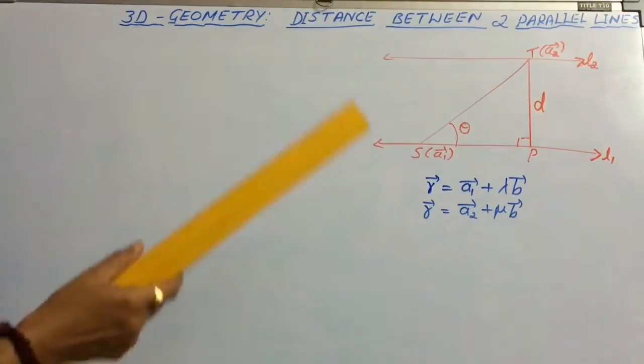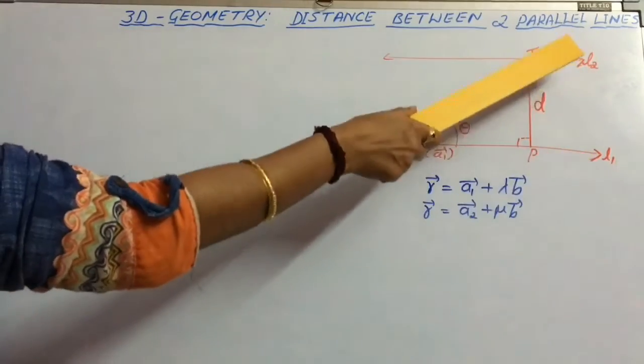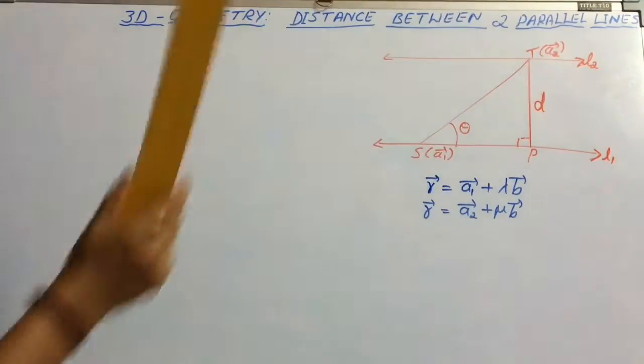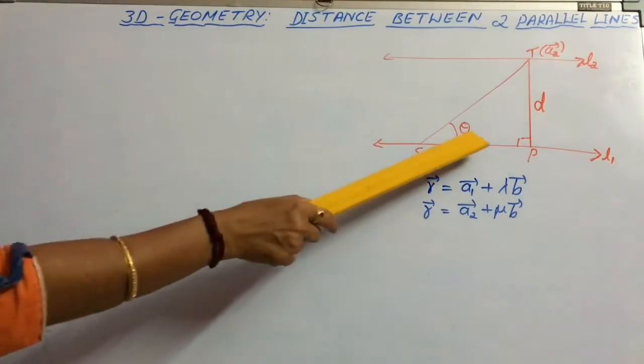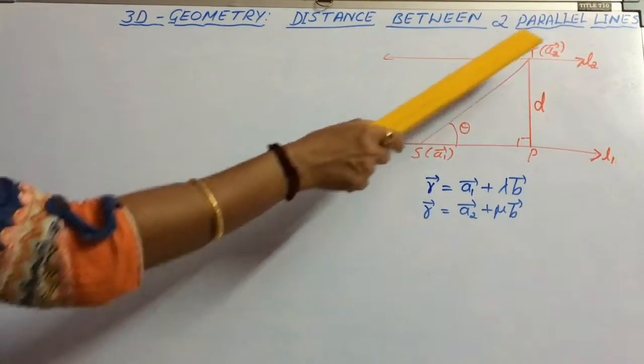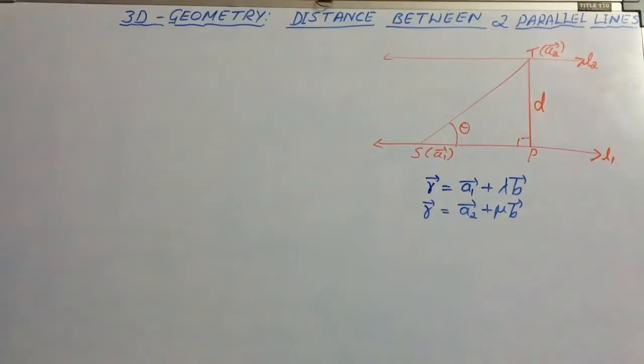Suppose Pt is the perpendicular distance between L1 and L2, let it be equal to d, and theta is the angle between vector St and vector b.